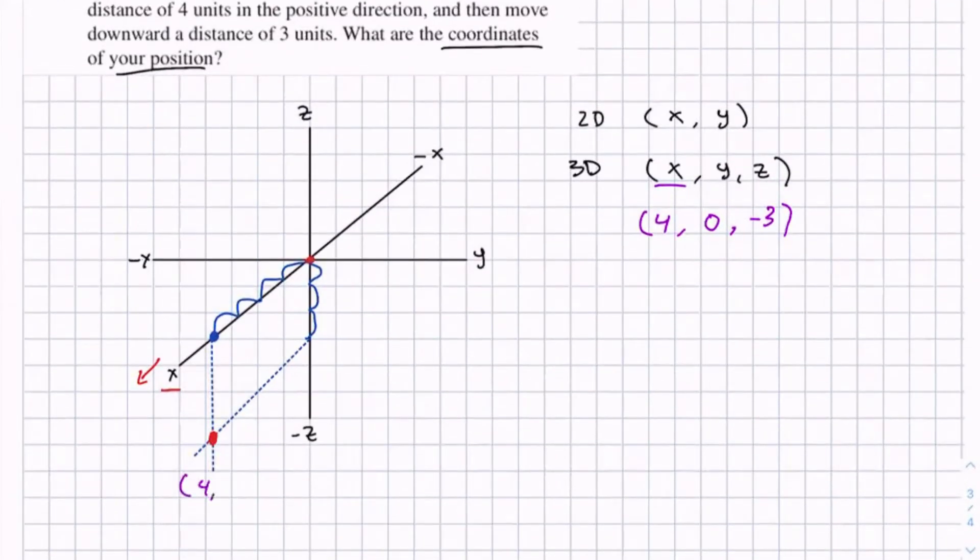4, 0, negative 3. So to help visualize this even more and to understand why y is 0, I'm going to show you another way to view this problem.